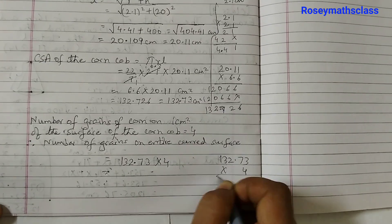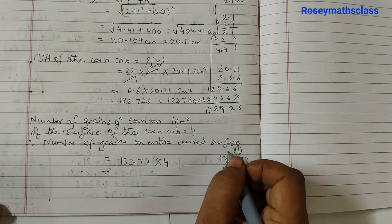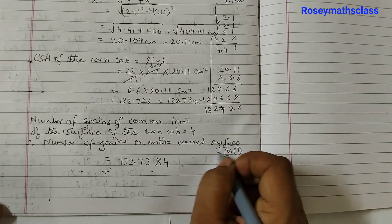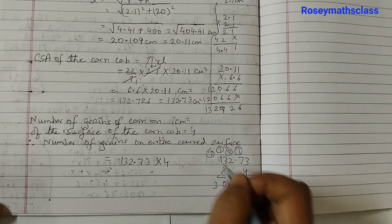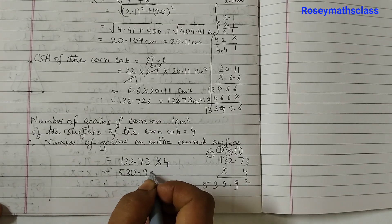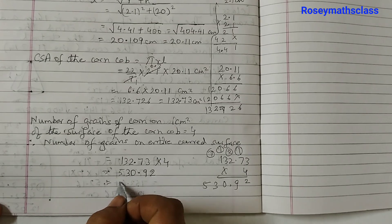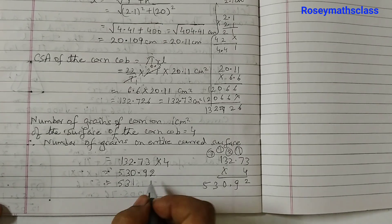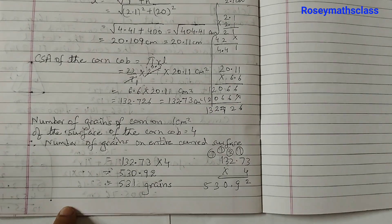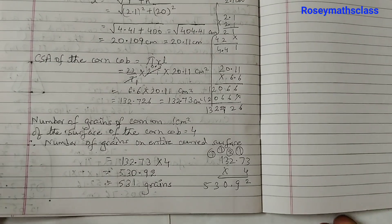So we will multiply this and when you do that, you will get 4 times 3, 12, 1, 28, 9, 4 times 2 is 8, 10, 1, 12, 13, 1. We get 530.92. So now we can just round it off to a whole number which is 531 grains. So there would be approximately 531 grains of corn on the cob.